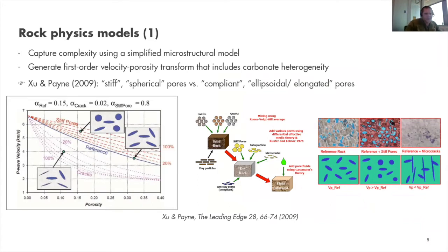To capture the complexity of carbonates in rock physics modeling, we use very simplified microstructural models to generate first-order velocity-porosity transforms — simple relations between P-wave velocity and porosity that include carbonate heterogeneity. As an example, Xu and Payne (2009) is a much-used paper that introduces stiff spherical pores versus compliant ellipsoidal elongated pores to generate various transforms, tweakable with a few simple empirical parameters.